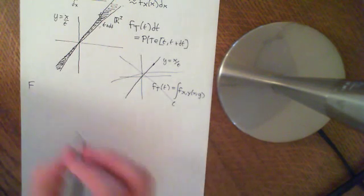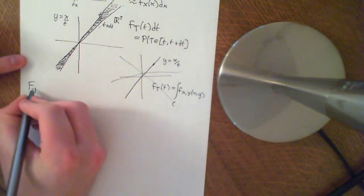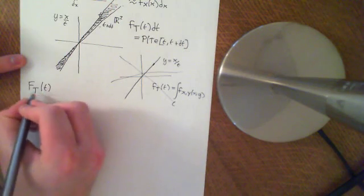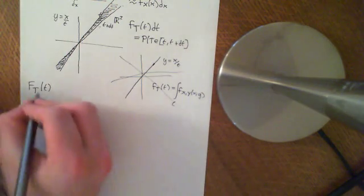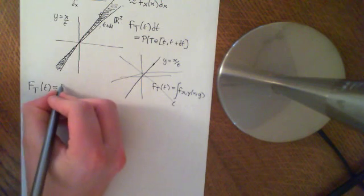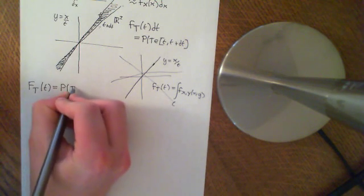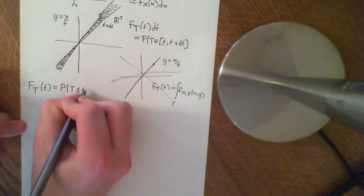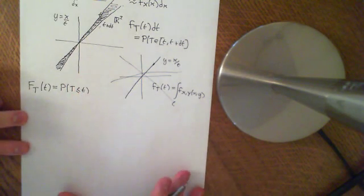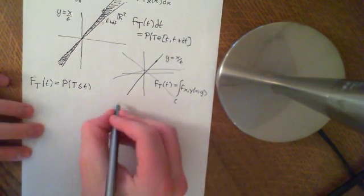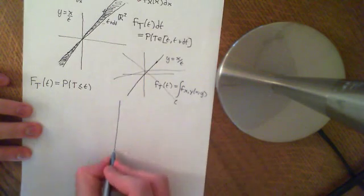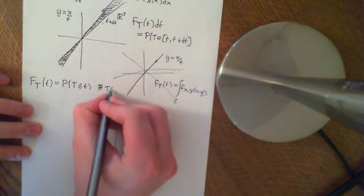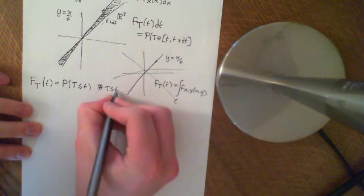So we're going to instead try and work out the CDF, which is the CDF of this random variable big T. As a function of little t, it is the probability that big T is less than or equal to little t.